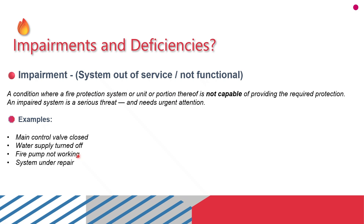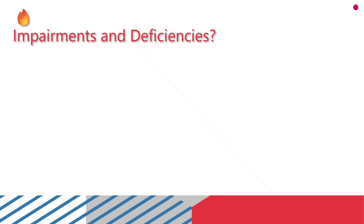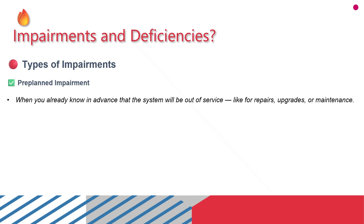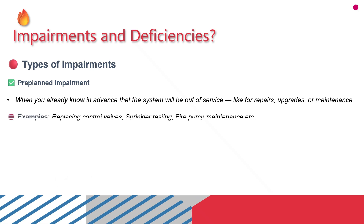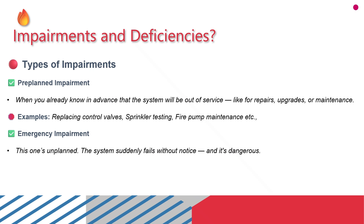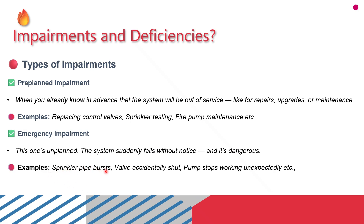Other impairment examples include a fire pump not working or a system under repair. Types of impairments: number one, pre-planned impairment — this is when we already know in advance that the system will be out of service, such as for repairs, upgrades, or maintenance. Examples include replacing control valves, sprinkler testing, or fire pump maintenance. The second type is emergency impairment — this is an unplanned impairment where the system suddenly fails without notice. Examples include a sprinkler pipe burst, a valve accidentally shut, or pumps stopping unexpectedly.